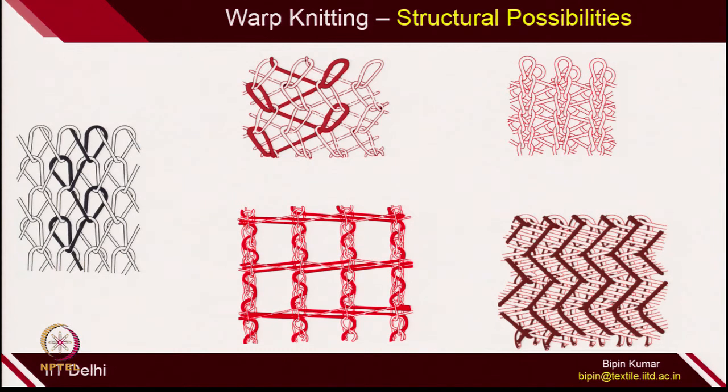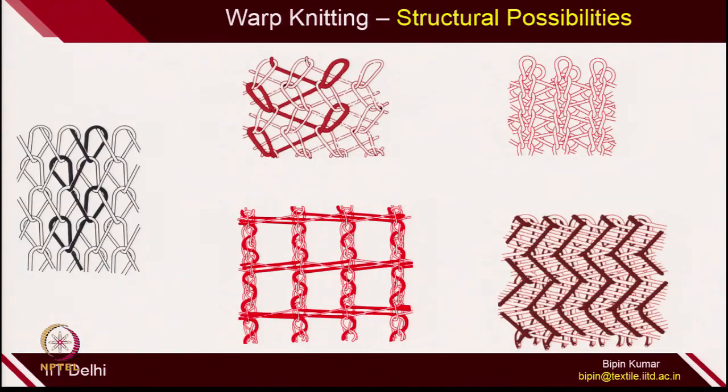Similar to weft knitting — where we have seen cable, aran, bulging, rib designs, and jacquard designs — in warp knitting we can also create many types of structures. These structures can be classified into 1-bar structures, 2-bar structures, multibar structures, and 3D structures, which I will slowly unfold and explain. At this moment, I have a few unique structures with me, and in coming weeks I will explain all of these structures and their technologies. Let me show you some of these structures.